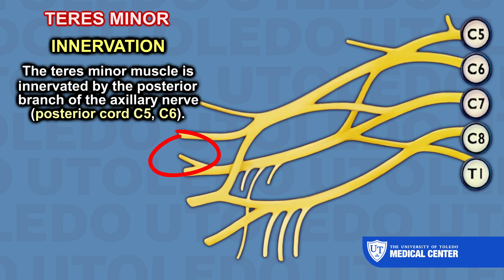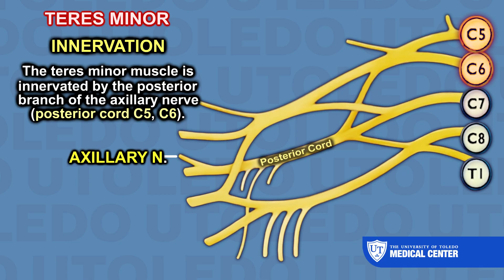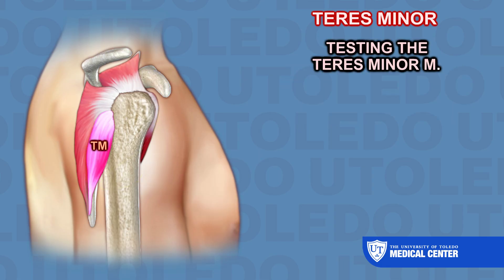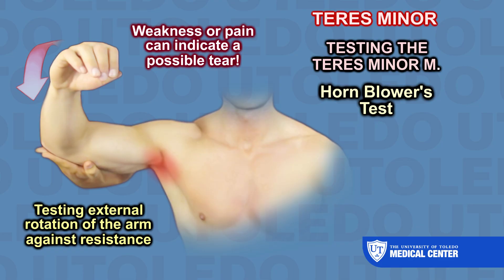Innervation: the teres minor muscle is innervated by the posterior branch of the axillary nerve. The axillary nerve is a continuation of the posterior cord of the brachial plexus and carries nerve fibers from C5 and C6. When testing the strength of the teres minor muscle, the hornblower's test is used to test external rotation of the arm against resistance. Weakness or pain can indicate a possible tear.